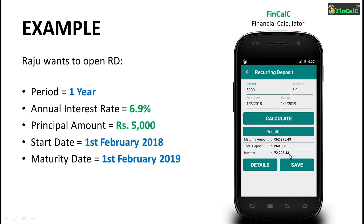So as you can see, for a recurring deposit of 1 year at the rate of 6.9% and a principal amount of Rs 5,000, the maturity amount is Rs 62,095.43. This means that the total interest earned is Rs 2,295.43. And since the principal amount of Rs 5,000 is paid every month for a period of 1 year, the total principal amount is Rs 60,000.